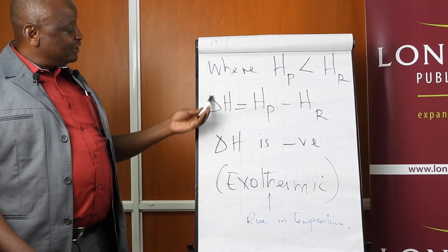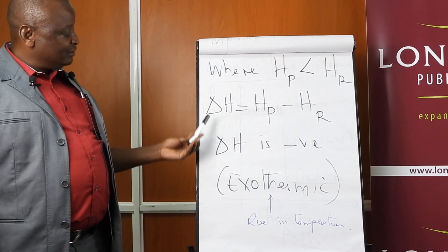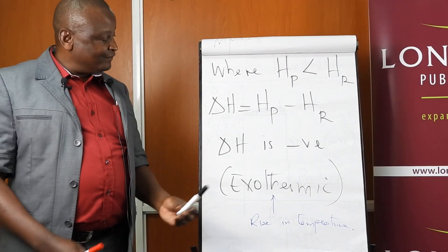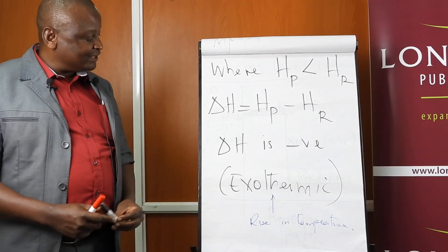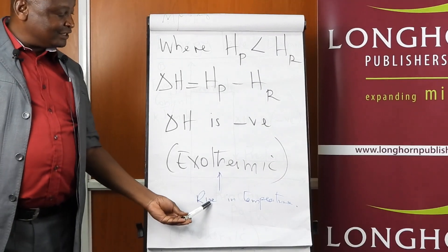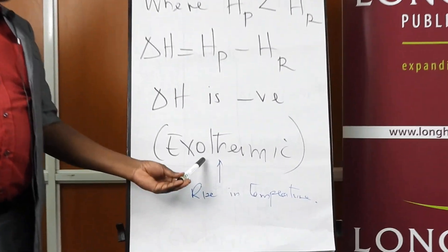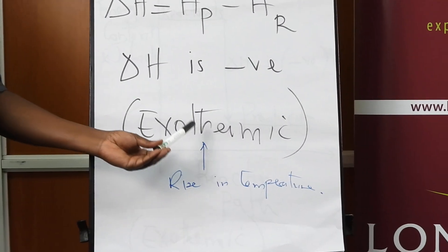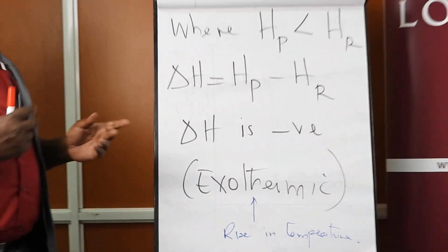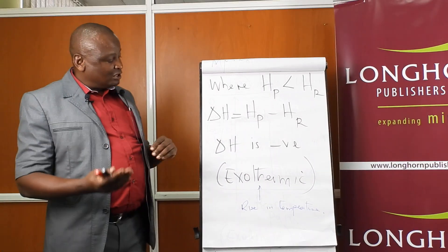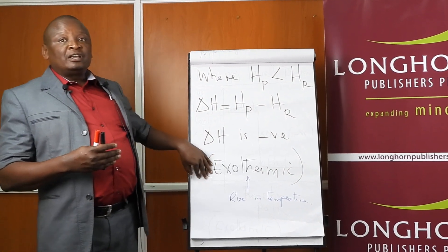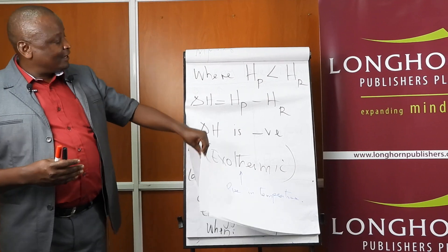Similarly, where the products have less energy than the reactants, implying that energy will have been lost from the system, substituting into the expression gives delta H a negative sign. That means where there is a rise in temperature the reaction is exothermic. These two conditions will tell you whether a process is endothermic or exothermic.